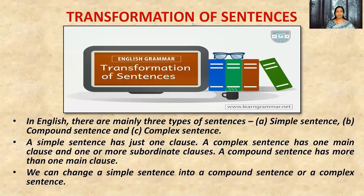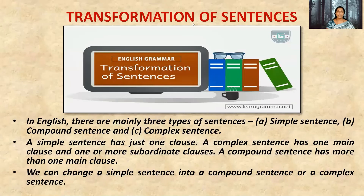Another topic in the third unit is transformation of sentences. In English, there are mainly three types of sentences: simple sentence, compound sentence and complex sentence. A sentence which has only one clause is called a simple sentence. A complex sentence has one main clause and one or more subordinate clauses. A compound sentence has more than one main clause. In this unit, we will be learning how to change a simple sentence into a compound sentence or a complex sentence.